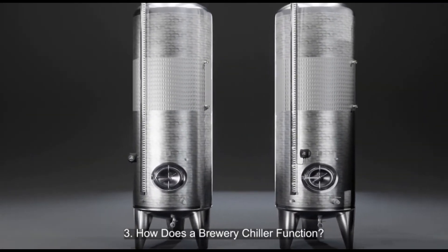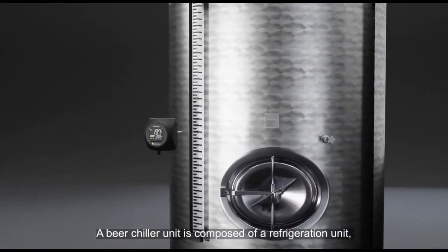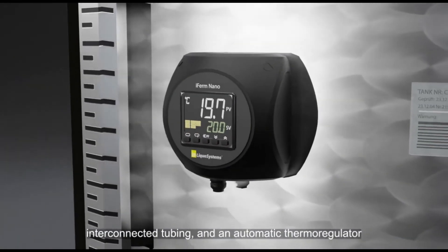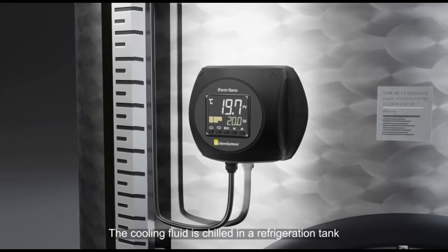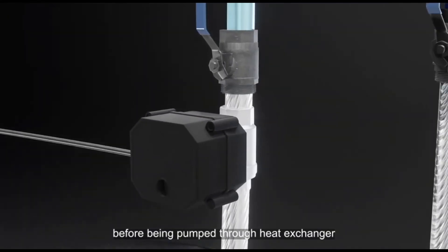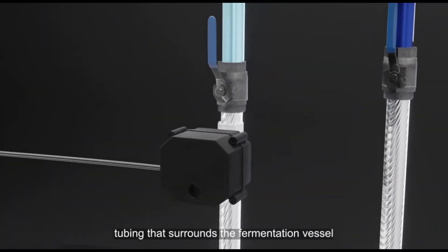How Does a Brewery Chiller Function? A beer chiller unit is composed of a refrigeration unit, interconnected tubing, and an automatic thermoregulator. The cooling fluid is chilled in a refrigeration tank before being pumped through heat exchanger tubing that surrounds the fermentation vessel.